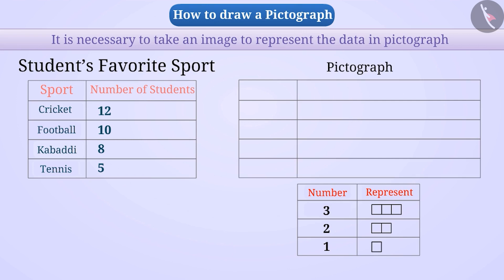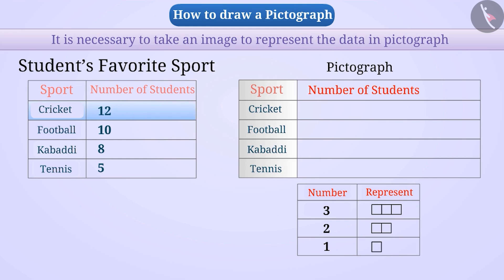We will draw a table where the first column mentions the name of the spot or its symbol and the second column represents the number of students in the form of images. For example, 12 students like cricket. We divide this number by the value of the image: 12 divided by 3 equals 4 with remainder 0. Therefore, we represent the number of students in the row of cricket by making 4 signs.